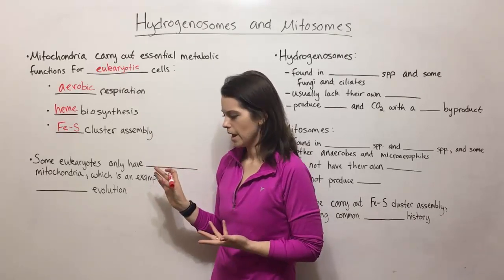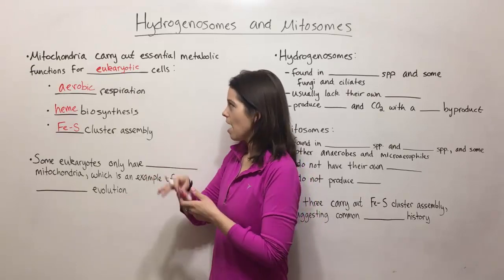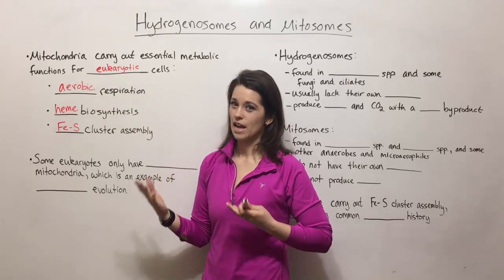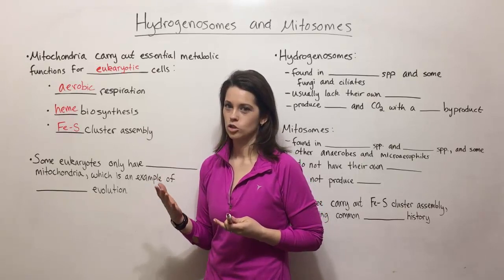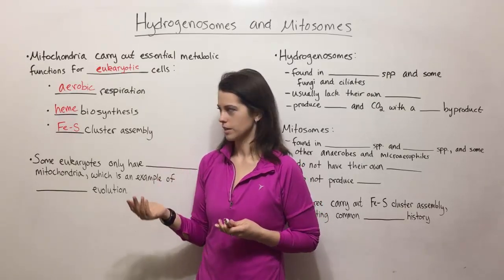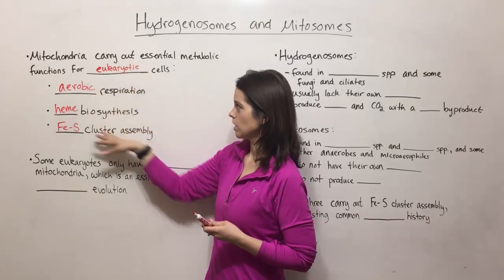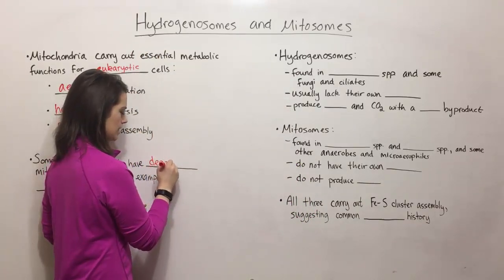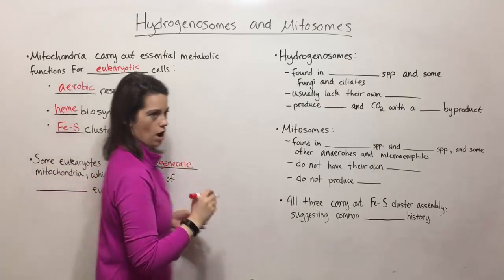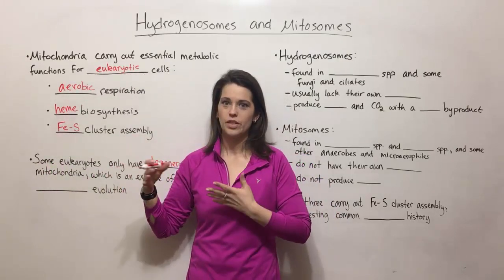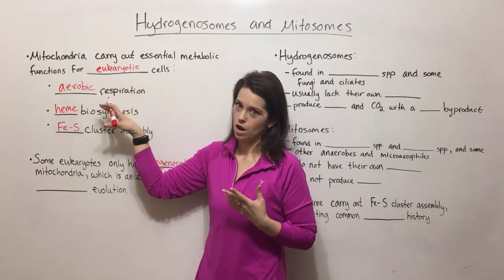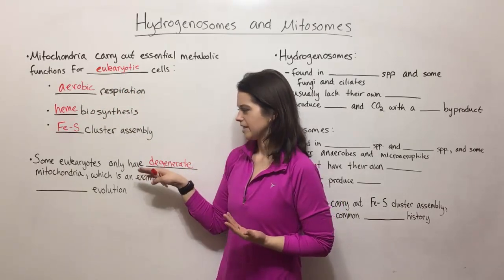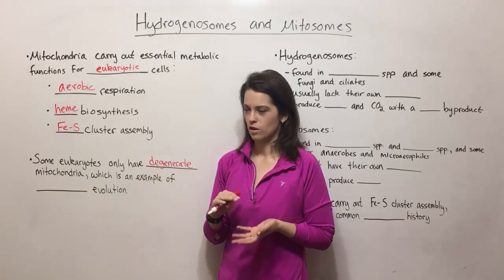So that's why mitochondria are important. Now, some eukaryotes don't have fully functional mitochondria that perform all of these functions. These are primarily anaerobic types of eukaryotes that don't use oxygen — where oxygen may even be toxic for them. Instead of having fully functioning mitochondria, they only have a couple of different forms of degenerate mitochondria, meaning that at some point in their evolutionary history they had fully functioning mitochondria but over time lost those functions, retaining only a subset.